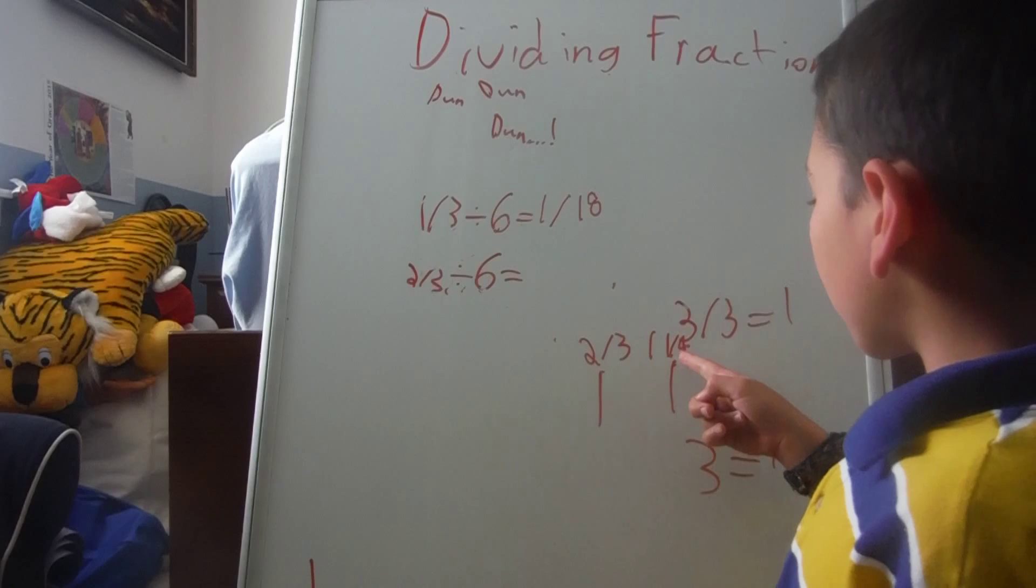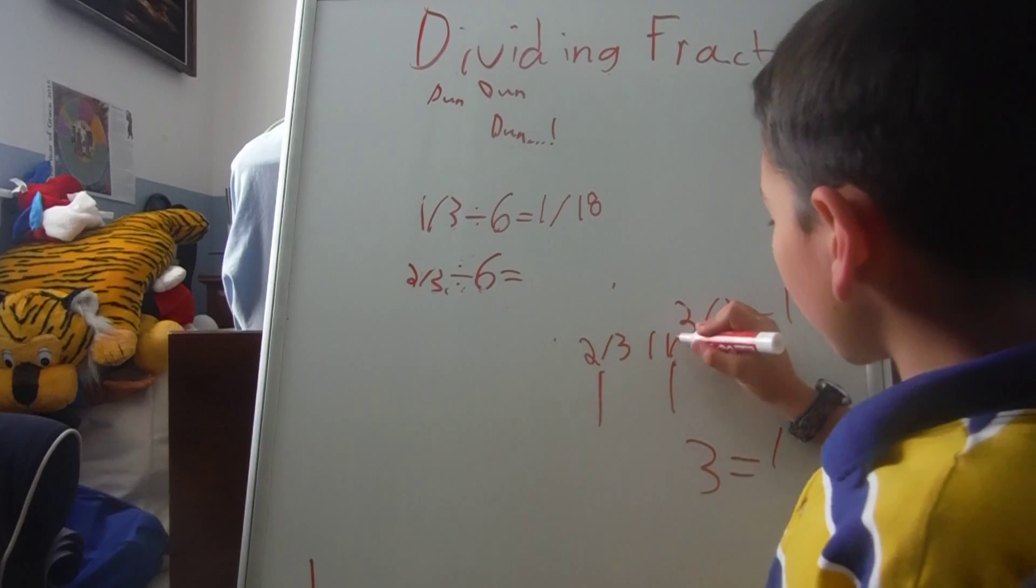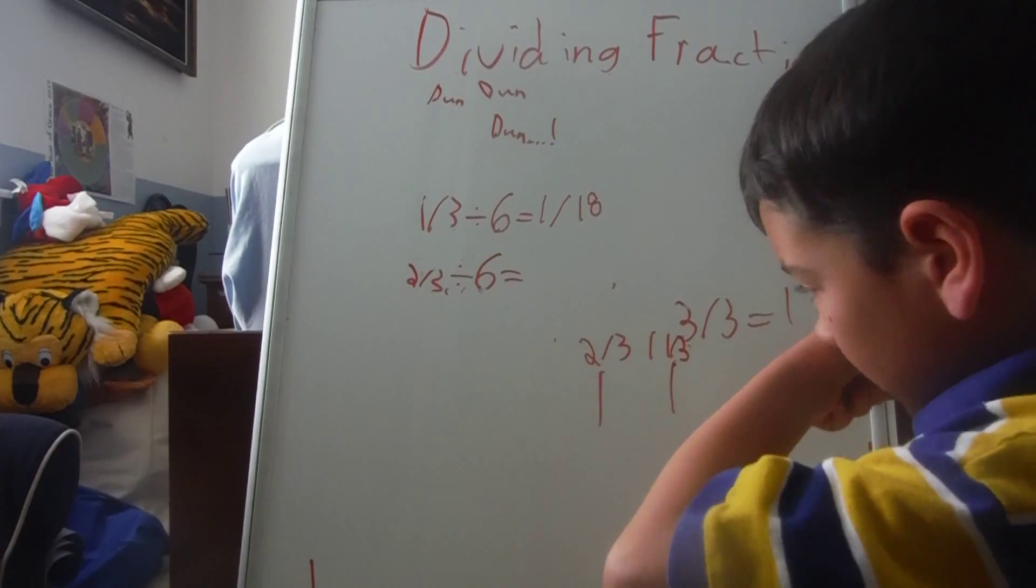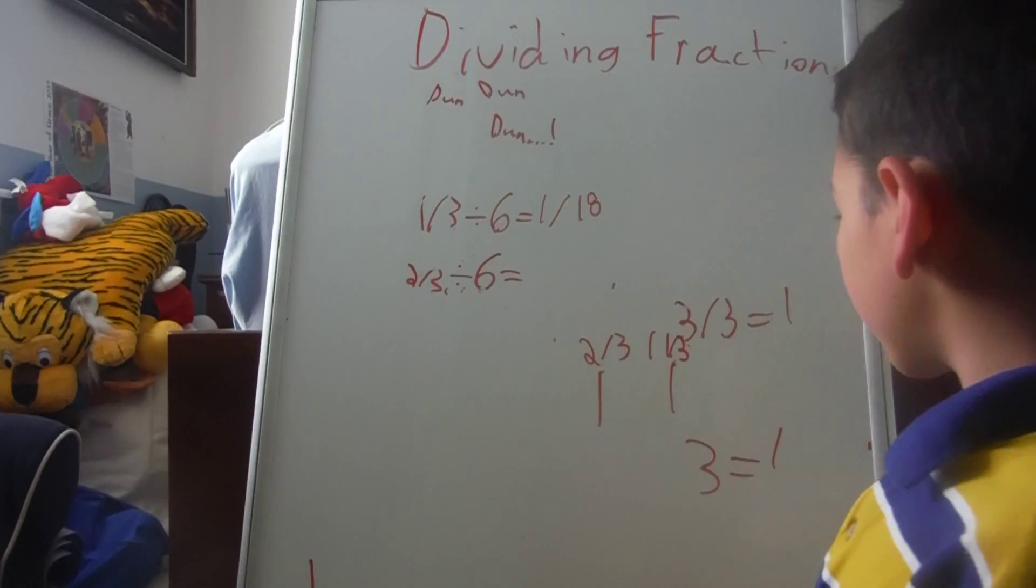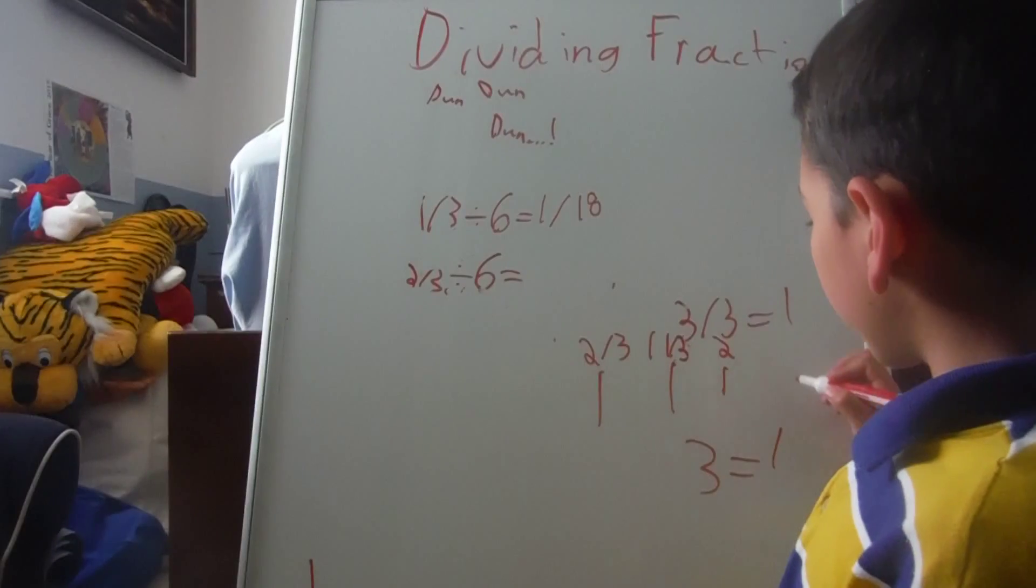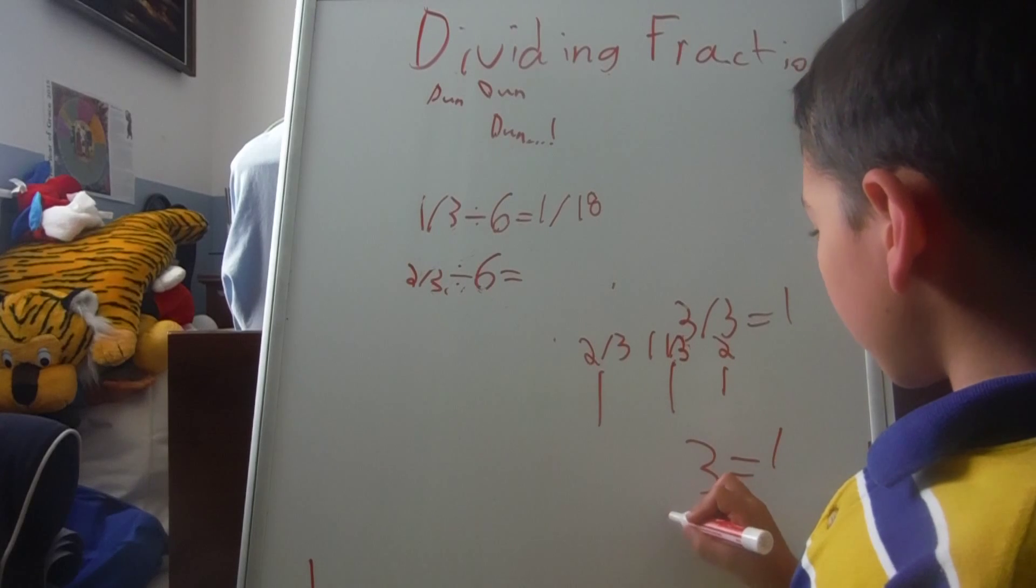this is one and one fourth because three equals one. Wait. Sorry. Three equals one. Yeah. So we got three thirds. That's one. But we got one left over. So that's one third. Sorry, I wrote one fourth. But it's one third.